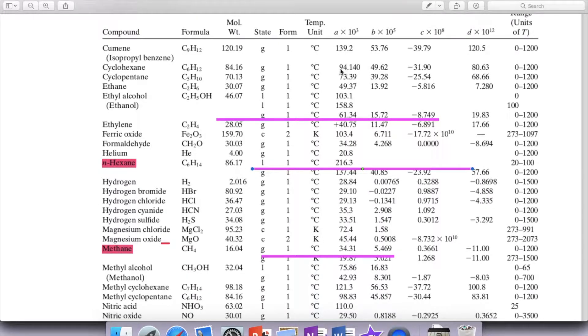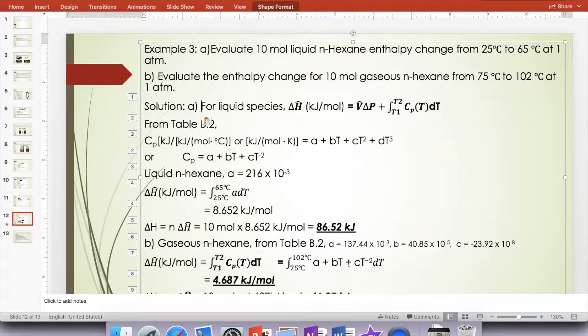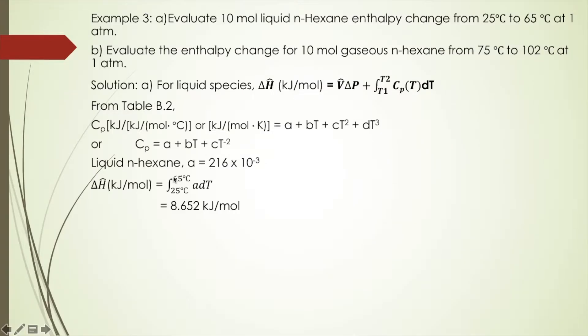If you read the constant from the table for liquid n-hexane, a × 10^3 is 216.3. So to get a, use this value times 10^-3. Substitute this number into the heat capacity in the integral.